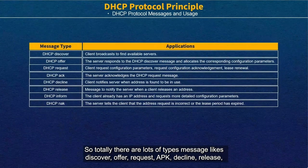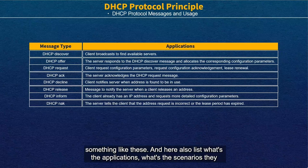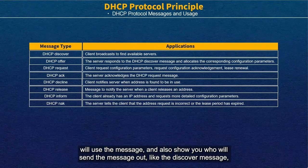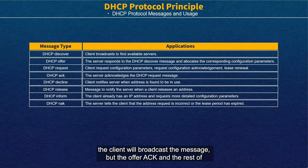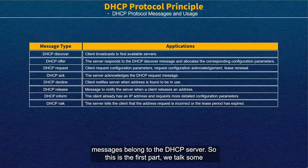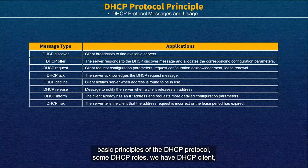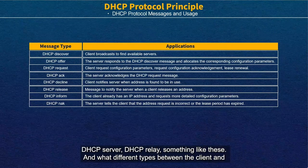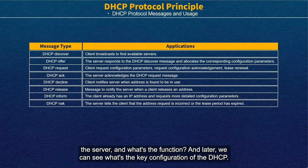In total, there are many DHCP message types: Discover, Offer, Request, ACK, Decline, Release, and others. Each message has a specific application scenario, and the table shows who sends each message — Discover is broadcast by the client, while Offer, ACK, and the remaining messages come from the DHCP server. This concludes the first part covering the basic principles of the DHCP protocol, the three roles of client, server, and relay, and the different message types. Next, we will look at the key configuration of DHCP.